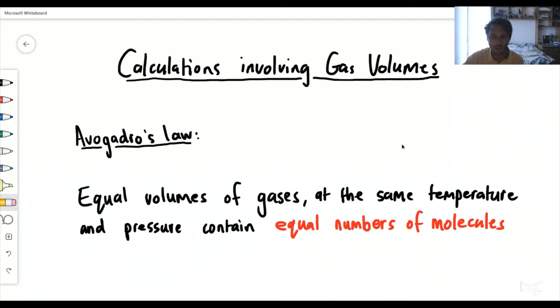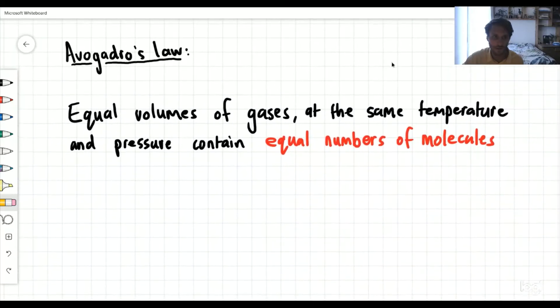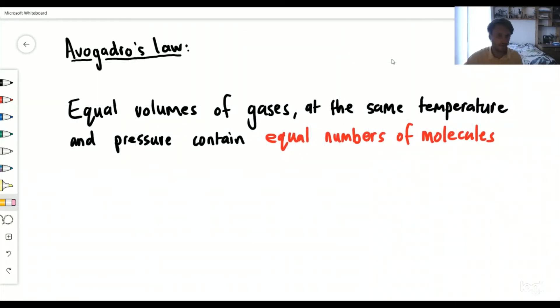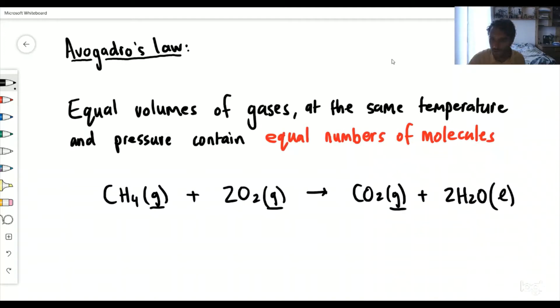We only really understand these things if we have an example. So let's take methane gas, CH4 with the state symbol G for gas, plus two oxygen molecules, also in the form of gas, producing carbon dioxide gas plus two molecules of water. And the state that water is in is a liquid. It's really important to put the state of these molecules.